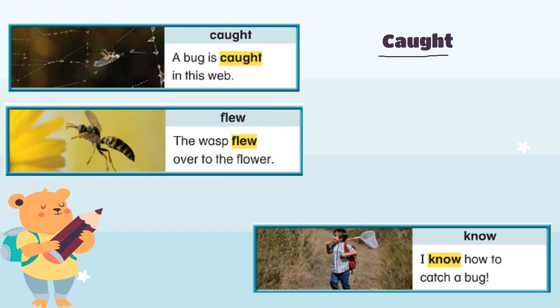Word number two is 'flew.' Let's say together: 'flew.' The wasp flew over the flower. Can you see the wasp in this picture? It is flying over the flower. But because this also happened in the past, we say 'flew.'